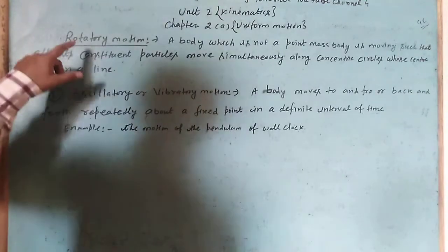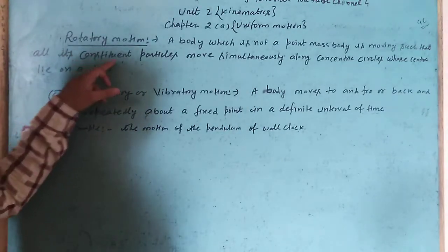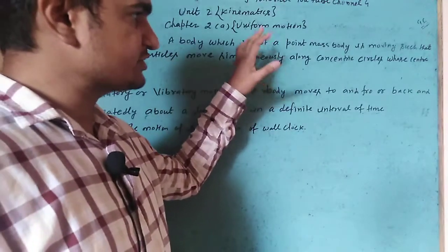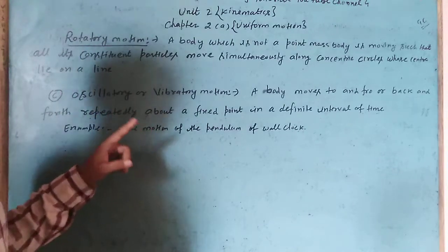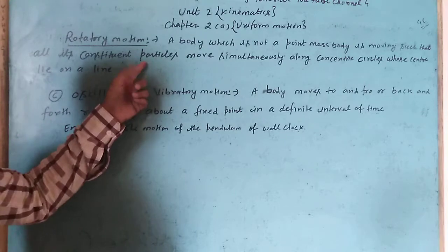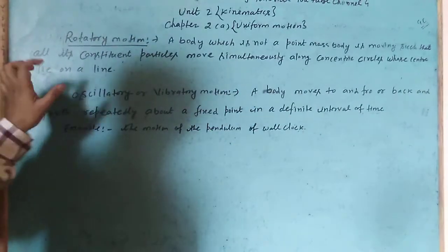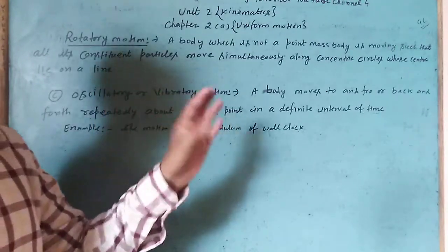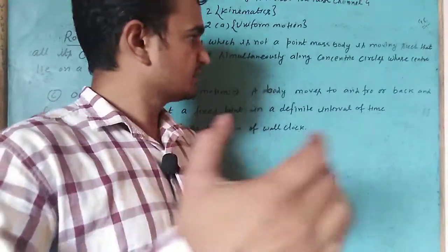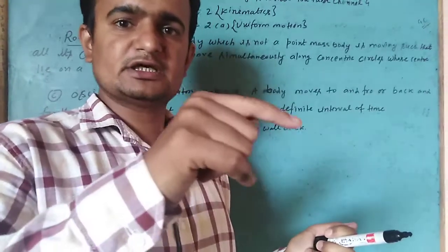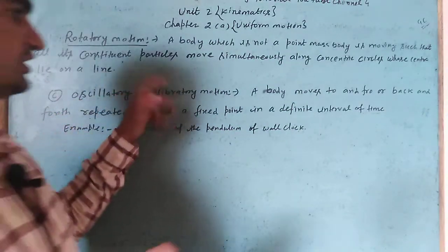Rotatory motion: a body which is not a point mass body, moving such that all its constituent particles move simultaneously along concentric circles whose centers lie on a line — कोई भी body जो point mass नहीं है, उसके सारे constituent particles simultaneously concentric circles के चारों तरफ move करते हैं और उनका center एक line पर होता है — उसे rotatory motion कहते हैं।